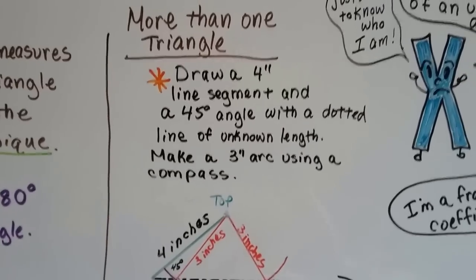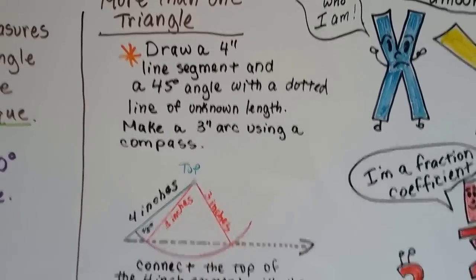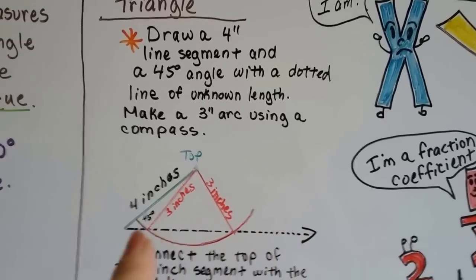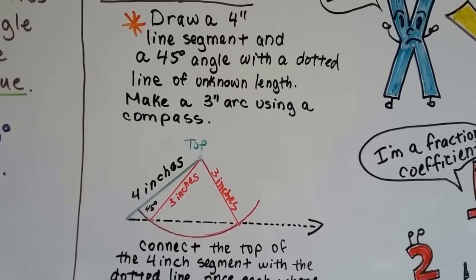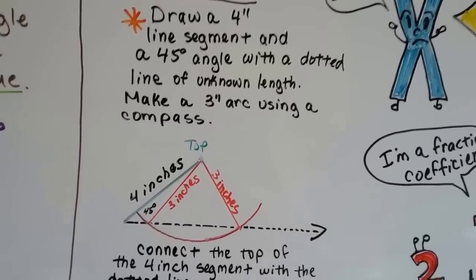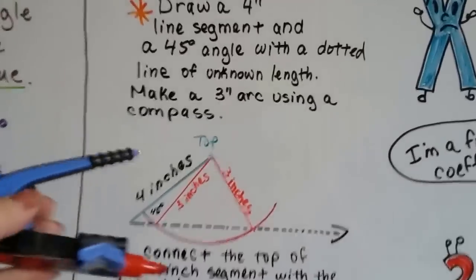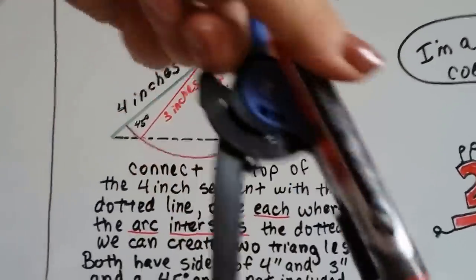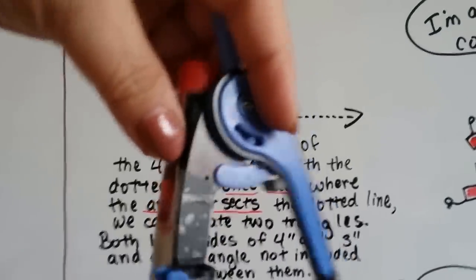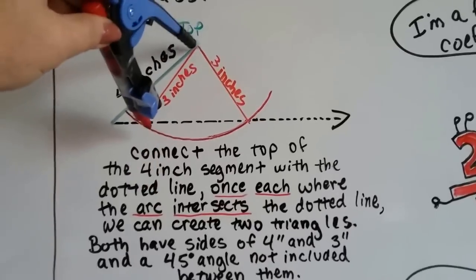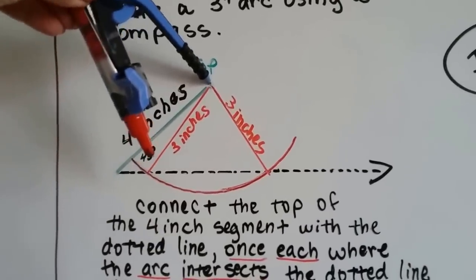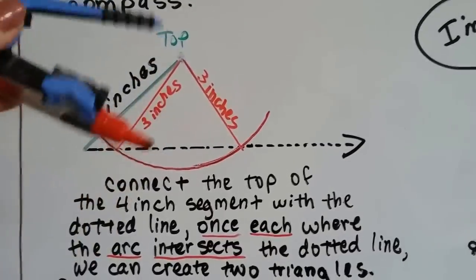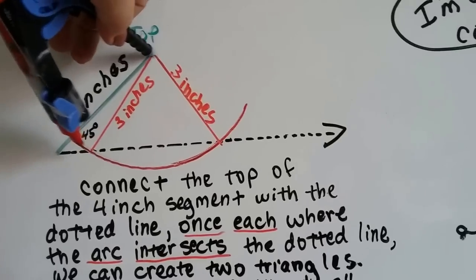More than one triangle: if we draw a four-inch line segment and a 45-degree angle — here's the four-inch segment in green and a 45-degree angle with a dotted line of unknown length — we can take a compass and put the point at the top where the four-inch segment connects with the dotted line. We set the compass to three inches.